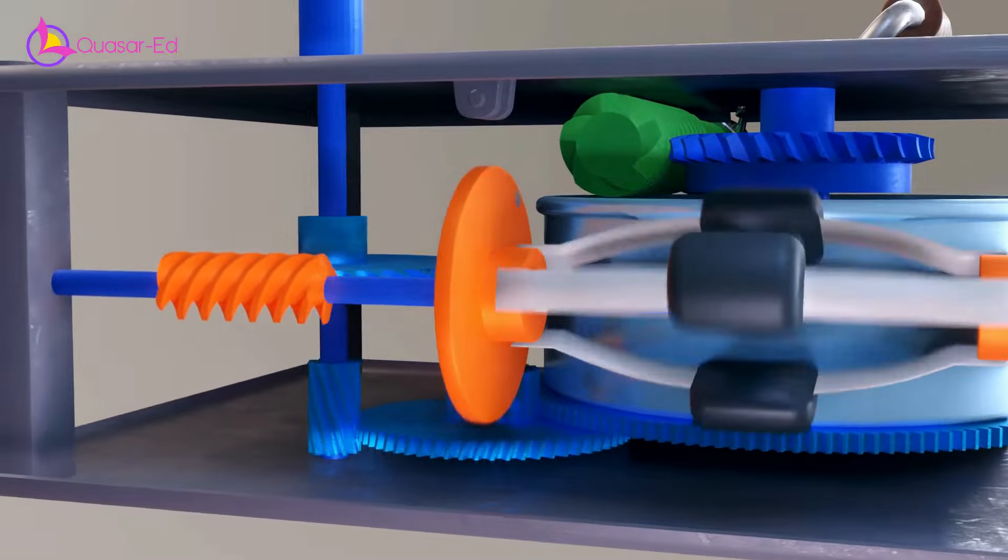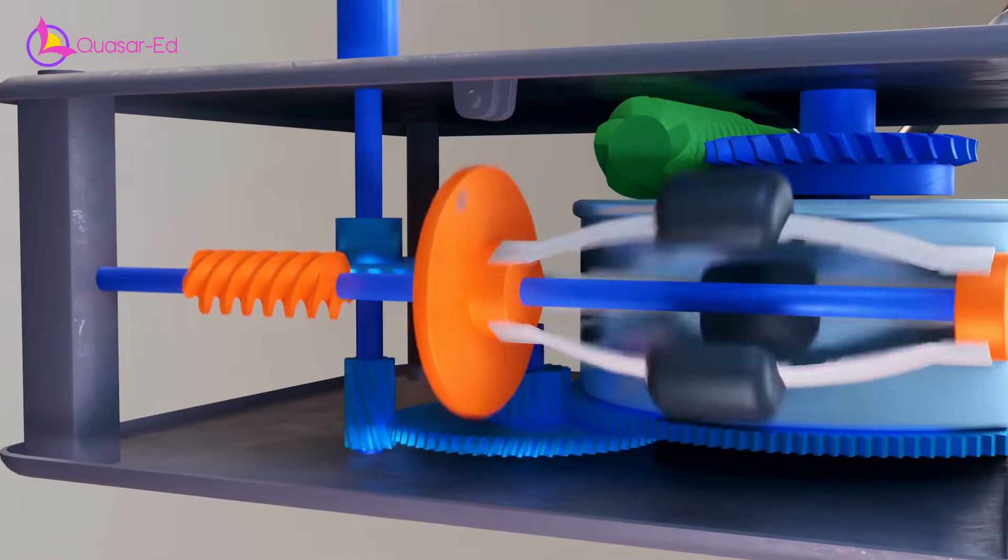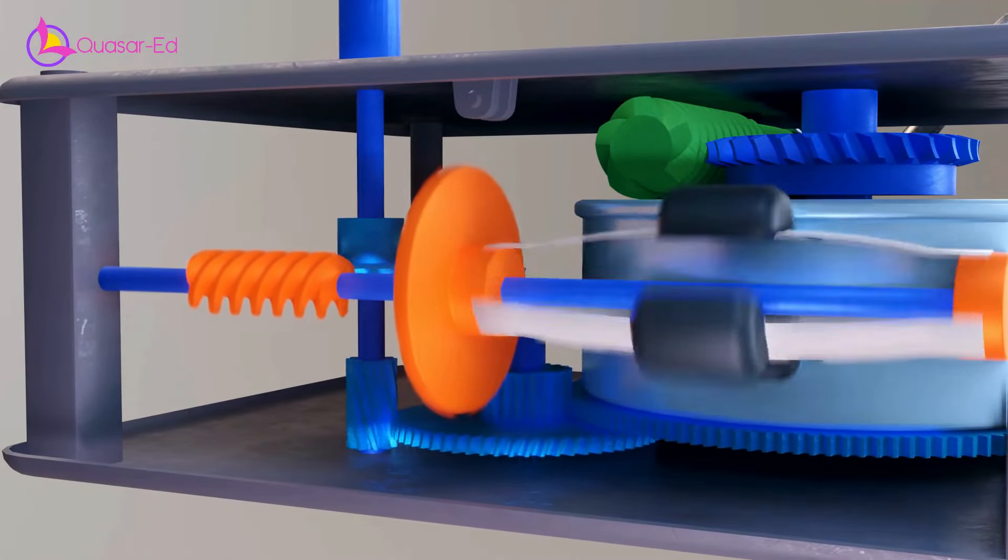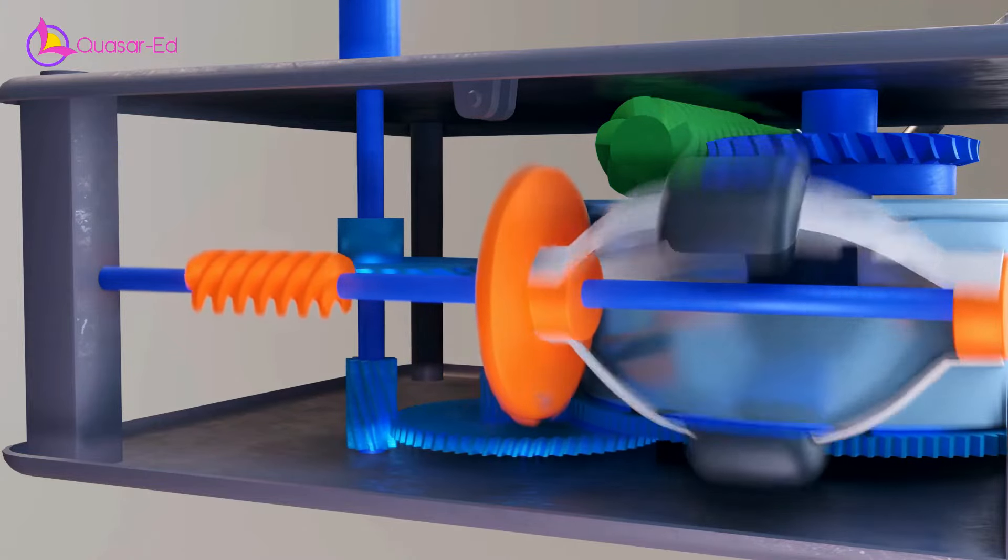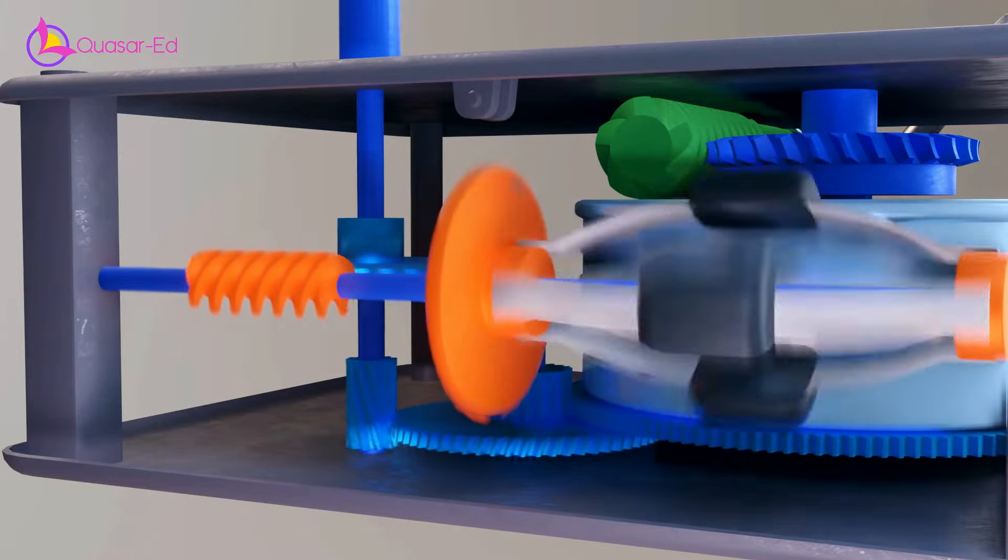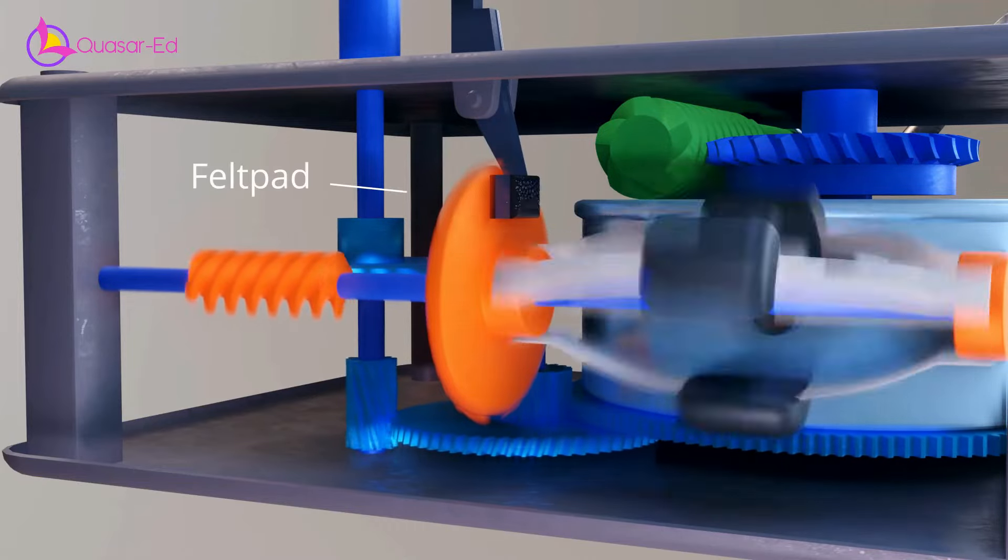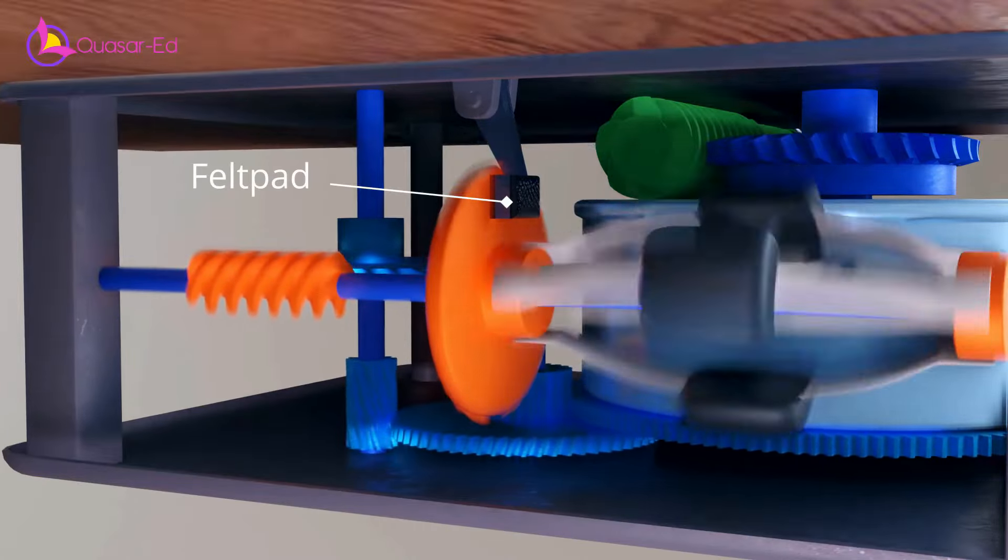When the speed is getting high, the weights on the shaft move outwards due to centrifugal force. The weights also pull the flange to one side. The flange is controlled by a small felt pad, connected to the speed control dial on top.